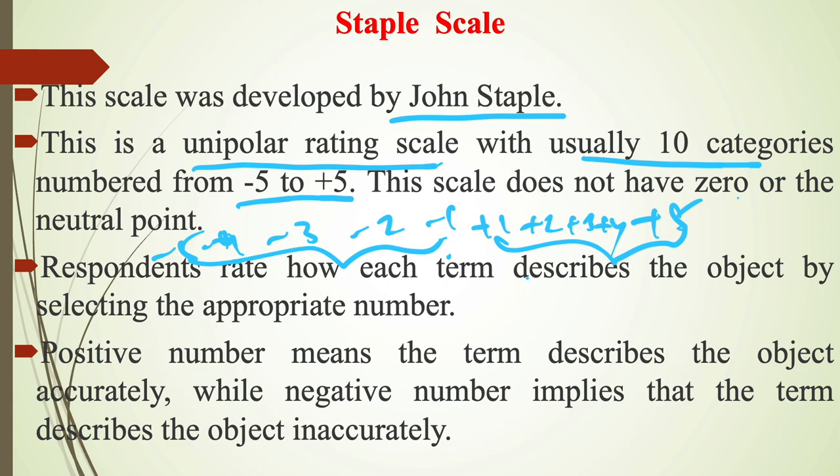Respondents rate how each term describes the object by selecting the appropriate number. Positive number means the term describes the object accurately while negative number implies that the term describes the object inaccurately. So the parameter is accuracy. If we take minus 5 to minus 1 then it is inaccurate, whereas plus 1 to plus 5 denotes accuracy of the object.